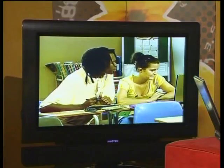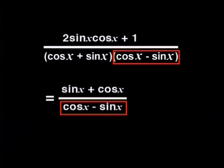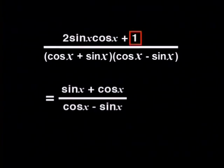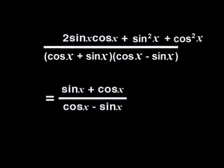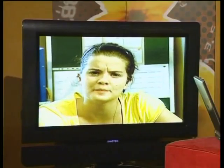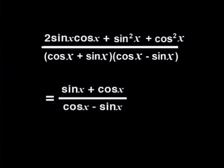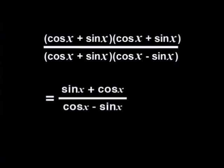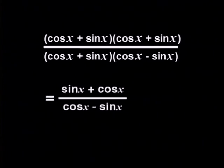One bracket is what we need to end up with, so the other bracket needs to cancel somehow. The trick is to write the 1 in the numerator as sine squared x plus cosine squared x. Rearranging terms so cosine squared x is first, it's a perfect square — it factorizes to cosine x plus sine x times another cosine x plus sine x. The cosine x plus sine x factor cancels with the denominator, and we get the right hand side as required. I've never complicated an expression before to solve a problem!